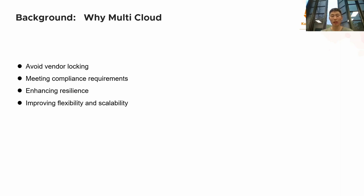Third, it enhances resilience. Outages can happen at any time for any cloud, which makes it very risky for organizations to rely on one vendor alone. Multi-cloud strategy offers businesses improved security, better failover options, and enhanced disaster recovery. It ensures data storage resources are always available, making the organization's cloud deployment more resilient for the long term. The last point is improved flexibility and scalability — with data volumes increasing exponentially, multi-cloud architecture is ideal for storing and processing data, enabling businesses to scale their storage requirements up and down.